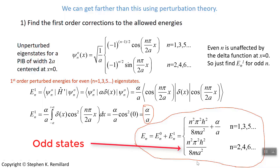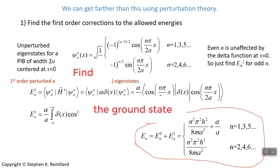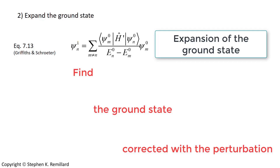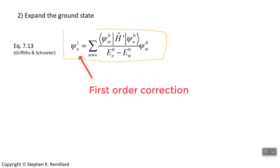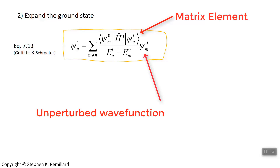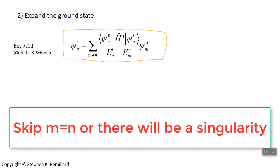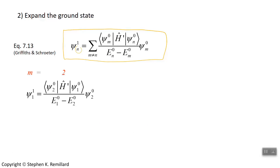Odd eigenstates are unaffected because the delta function is at a place where the wave function has no value. One other thing that can be done in perturbation theory is finding the ground state with the perturbation correction applied. Psi sub n superscript 1 means the first order correction to the nth eigenstate — we're going to do the ground state. If you carry out the sum involving these matrix elements and the unperturbed wave functions and unperturbed energy eigenvalues, you'll get the first order correction to the wave function. It's very important to skip m equals n, because then you have an infinity.